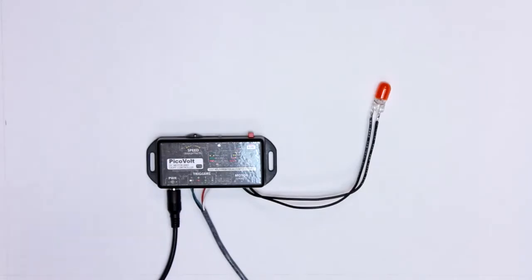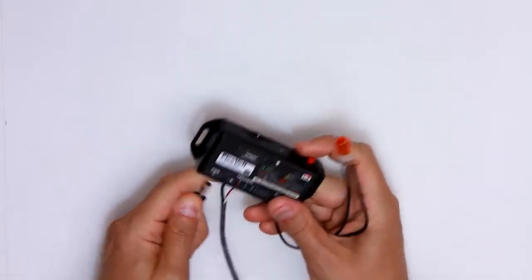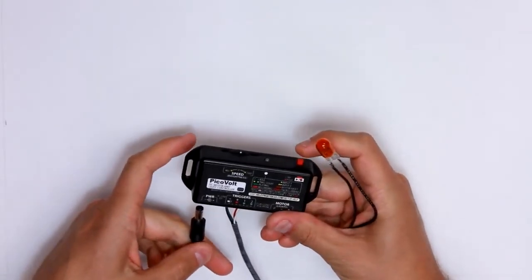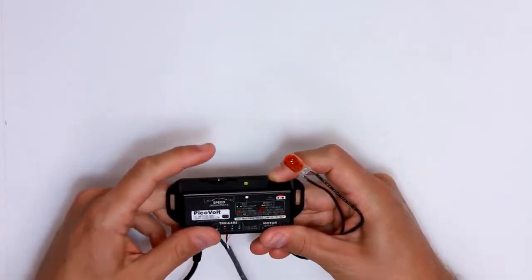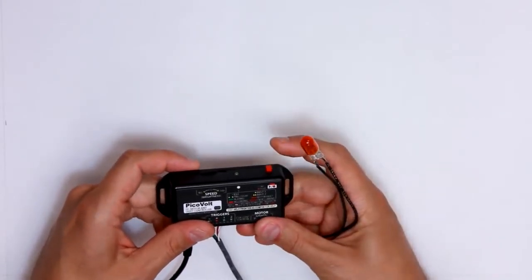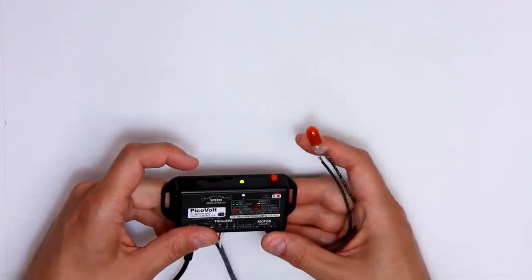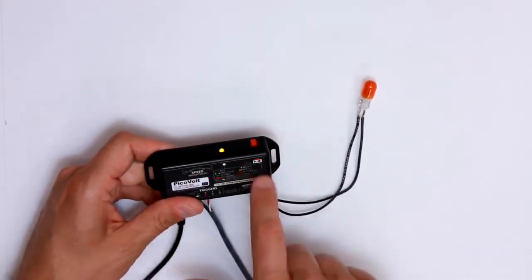In this video I'll be demoing the light mode of the PicoVolt. In light mode we don't need forward or reverse, so we have a special mode, mode 5, that tells the PicoVolt you're controlling lights. It uses the entire range of the wheel for the brightness of the light.